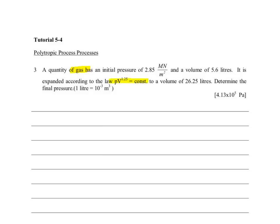We know the polytropic rule pV to the power of n, which n is 1.25, and we know the volume changes from 5.6 liters to 26.25 liters. We are supposed to determine the final pressure.